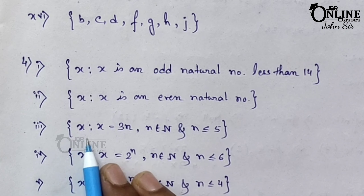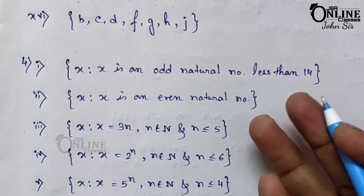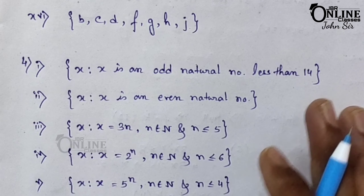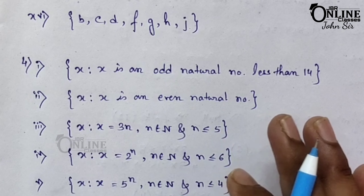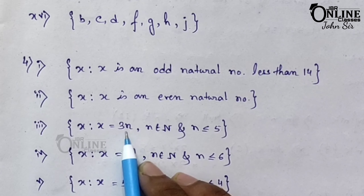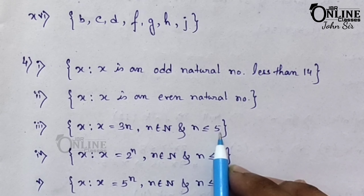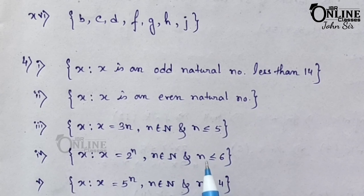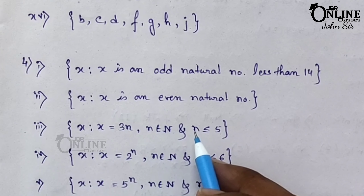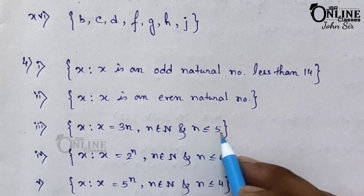Number 3: {3, 6, 9, 12, 15}. Each digit is a multiple of 3. So write as: {x | x = 3n, where n belongs to natural numbers and n is less than or equal to 5}. Since the last number is 15 and 3 times 5 equals 15, you need the boundary n ≤ 5. If n were 6, then 3 times 6 would be 18, exceeding 15.